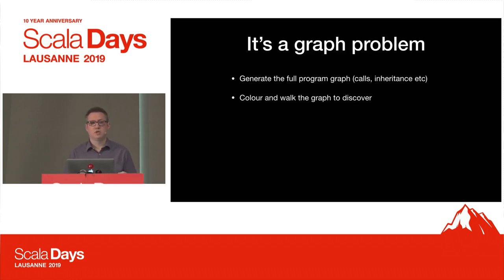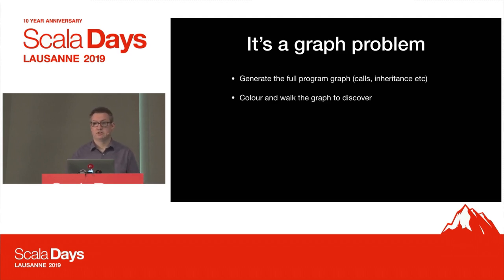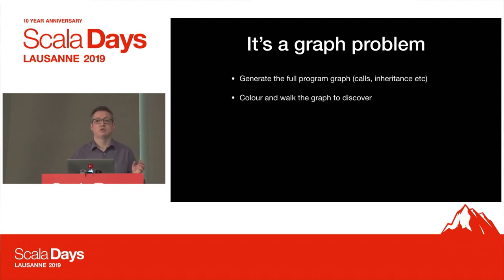What's interesting is this is a pure graph problem. We can generate these graphs. The information is there, but effectively you have to take all the forward references and do a reverse index on it. Then we can do interesting graph things - we can colour it, and you can start to tell really interesting things about the programme.